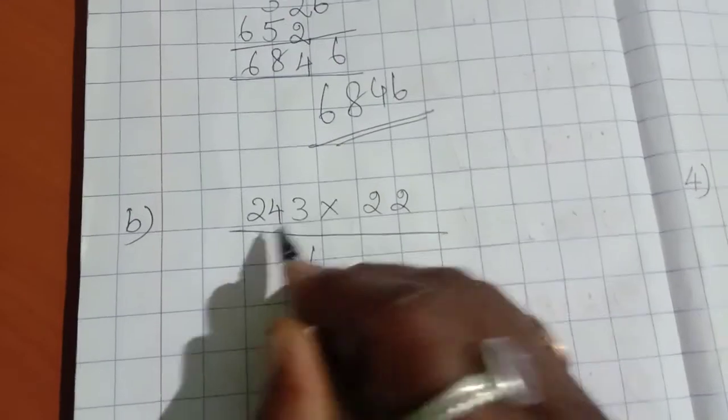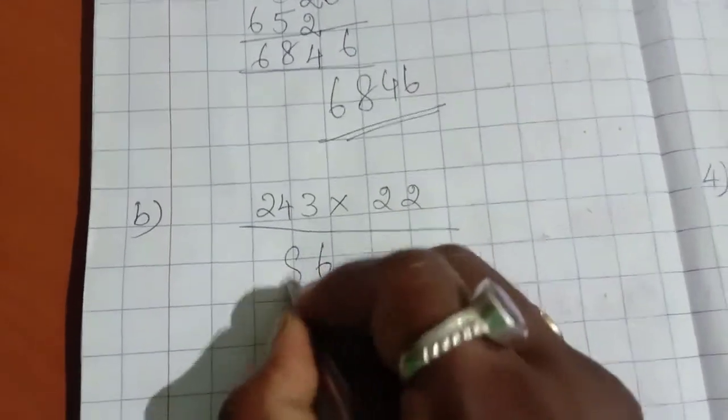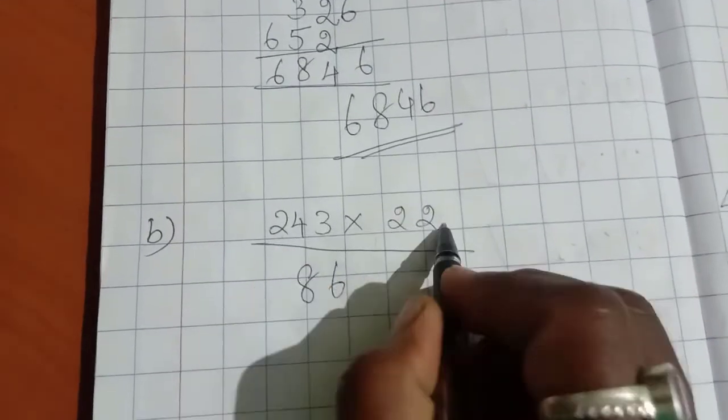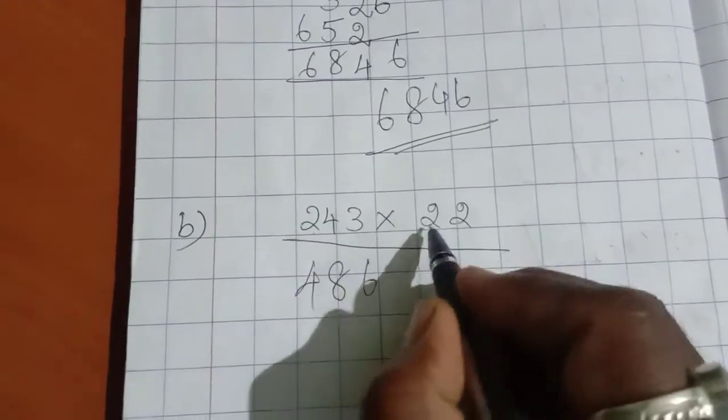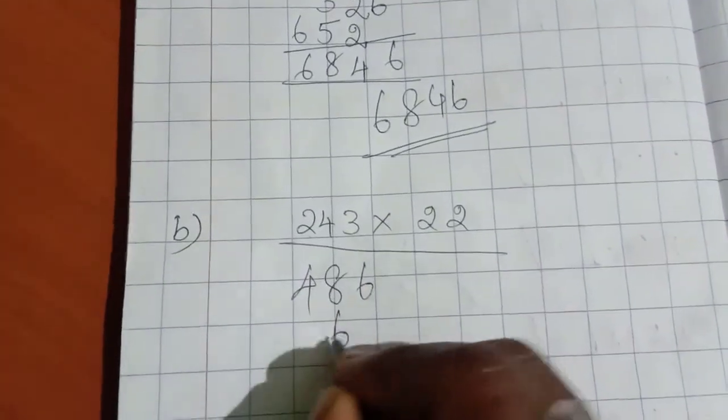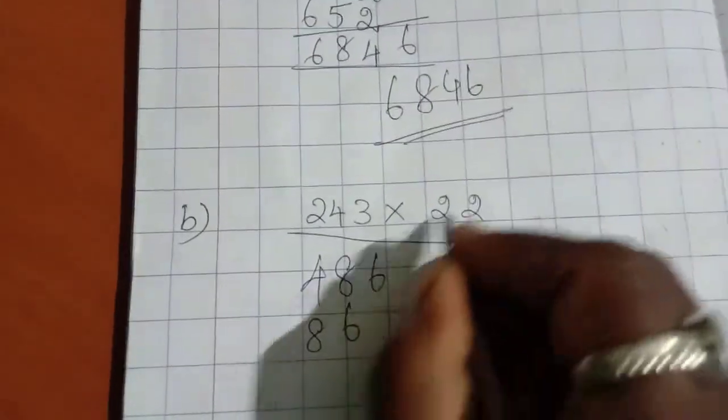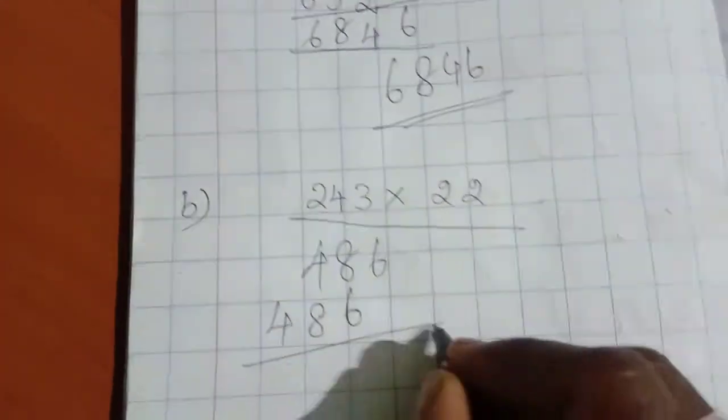Three twos are six, four twos are eight, two twos are four. The same way, ten's place number: three twos are six, four twos are eight, two twos are four.